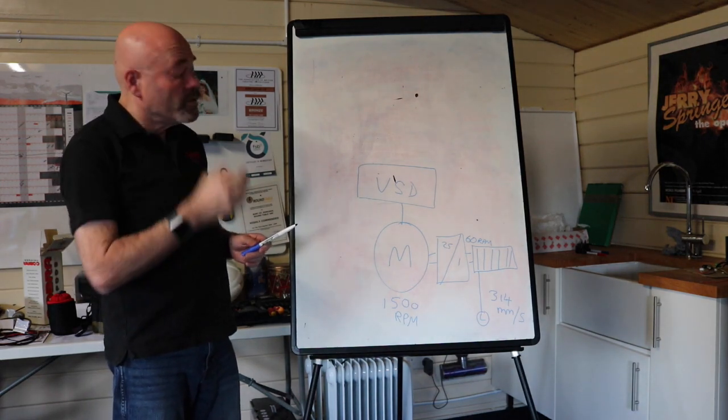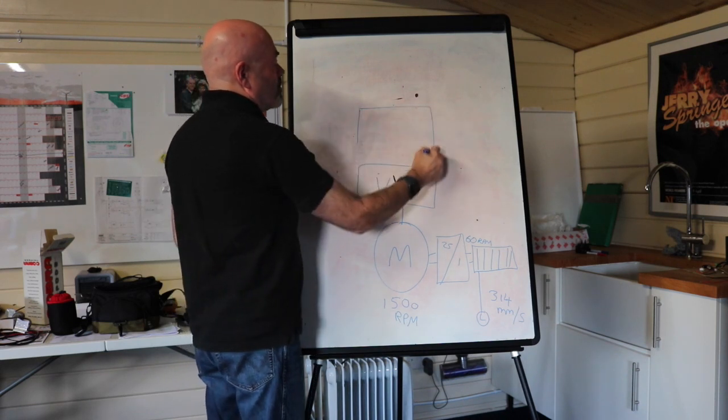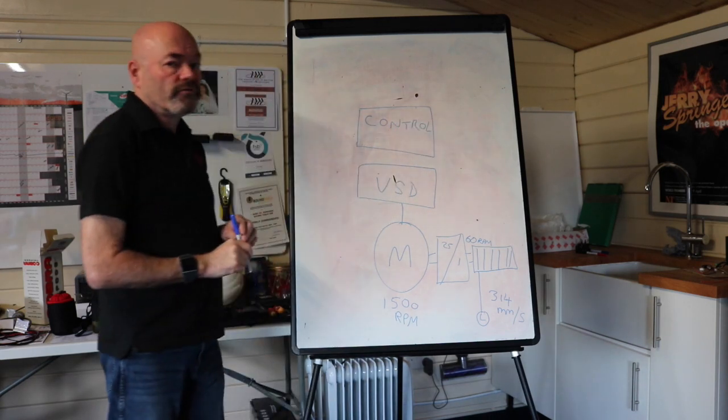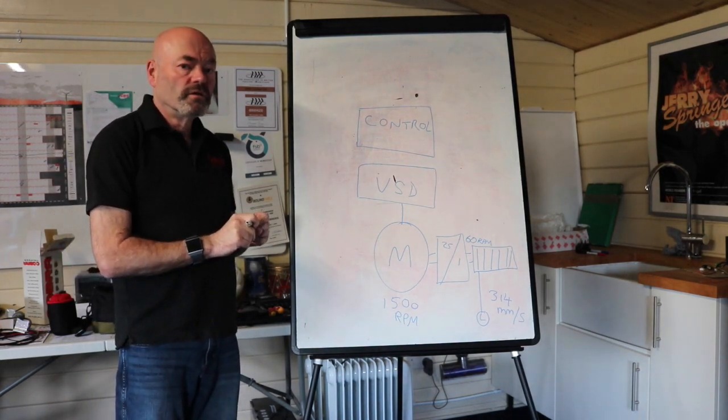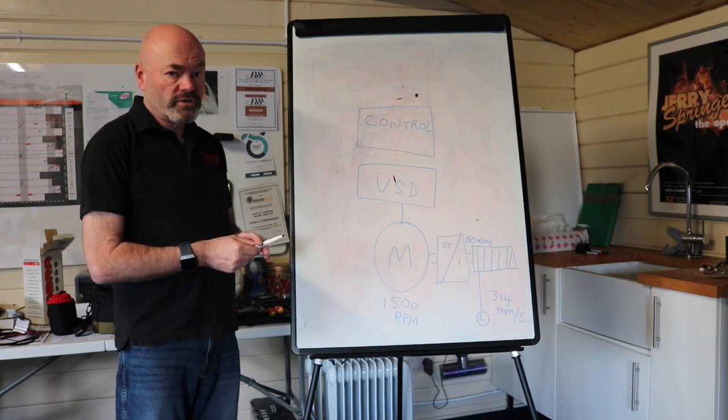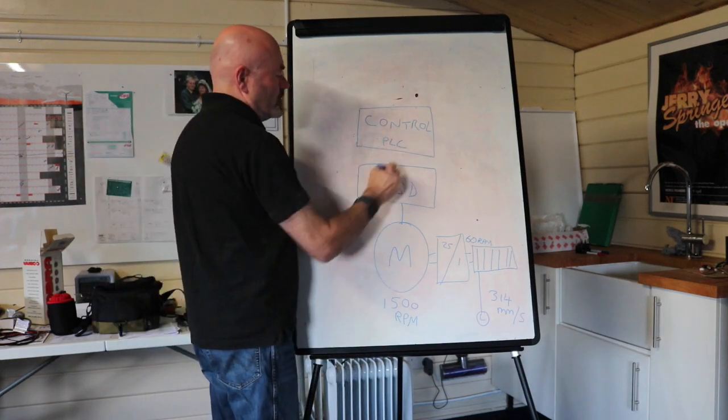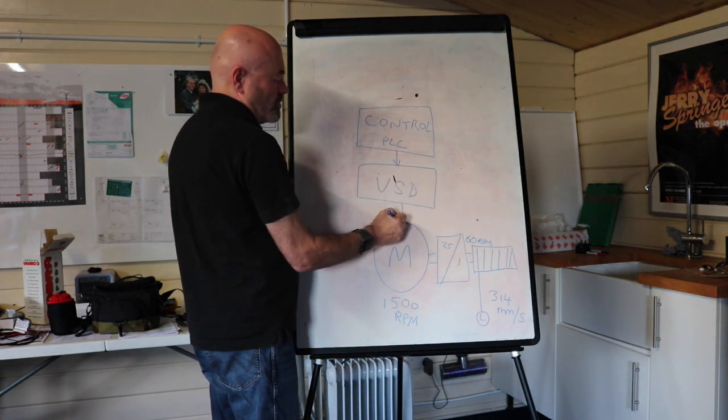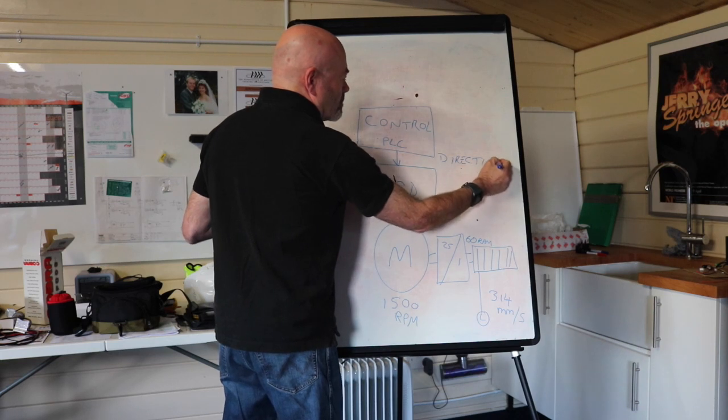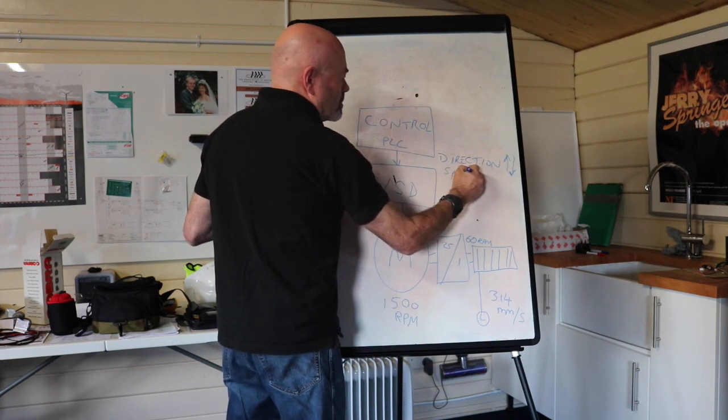And the variable speed drive needs to be given the information as to how fast it's got to travel and in which direction. So this will come from a control system. Now very often, that's a PLC, a programmable logic controller. Certainly AVW use PLCs, many of the other automation suppliers use PLCs. The alternative would be some dedicated hardware, motion control hardware. So the PLC has to give the variable speed drive its information. The information being direction, in this case up or down and speed.